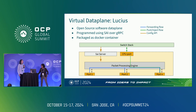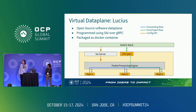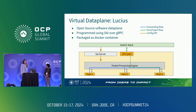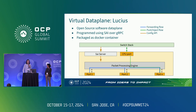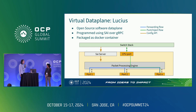I'm going to talk about Lucius, which is our virtual data plane for Alpine. A few things to note: the only goal is to enable testing. This is not trying to simulate a real ASIC, it's not trying to be high performance. Its main goal is so that we can test everything above the data plane. Lucius is an open-source software data plane written in Go. It's lightweight, programmed using SAI over a gRPC protocol, and packaged as a Docker container.